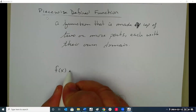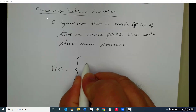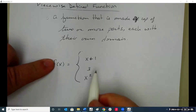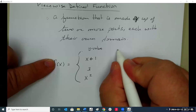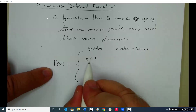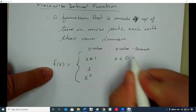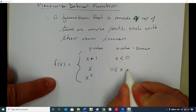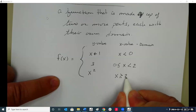These are my y values — the range. Here are my x values — the domain. So if x is less than zero, we use this equation. If x is between zero and two, we use this equation. And if x is greater than or equal to two, we use this equation.